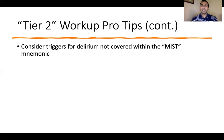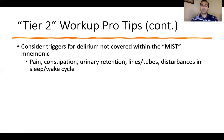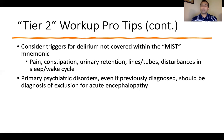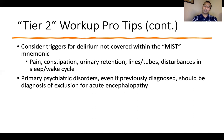More tier two pro tips. Consider triggers for delirium not covered by MIST — think of the older, frail patient with pain, constipation, urinary retention, bothersome lines and tubes, or disturbances in sleep-wake cycle. These can be enough to push someone into acute encephalopathy. Also, regarding primary psychiatric disorders: even if previously diagnosed by a psychiatrist, when someone is acutely encephalopathic, their psychiatric disorder should be a diagnosis of exclusion. We want to make sure we don't miss infection, metabolic derangements, or structural etiology. Diagnoses like acute psychosis, acute mania, or atypical depression should come last.